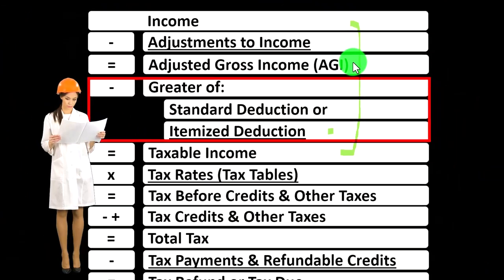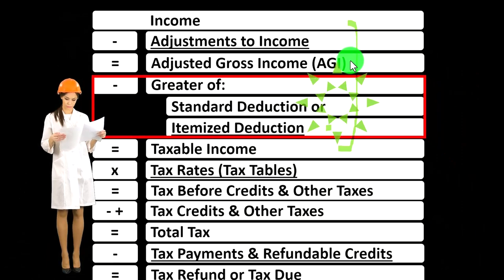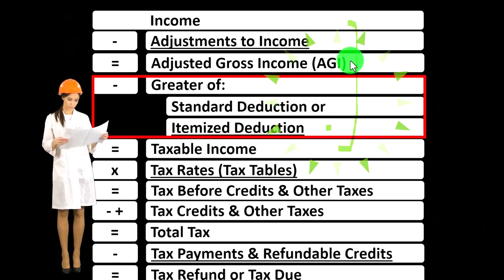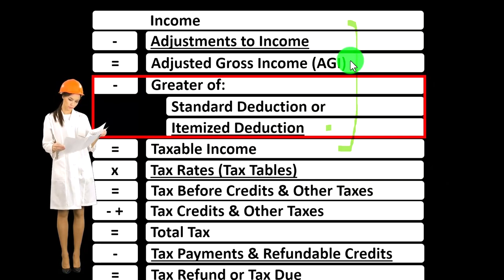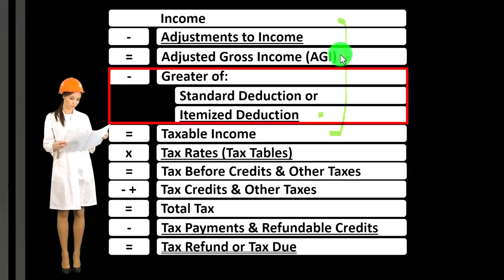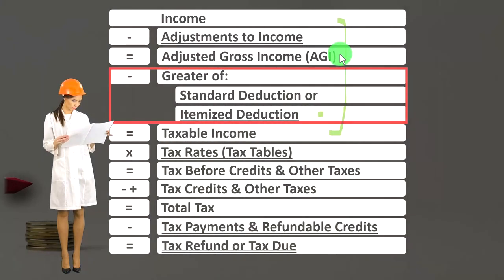They arrive at this subtotal of the adjusted gross income — the AGI. That adjusted gross income is often the number used, or at least based upon, when we have phase-outs, as income thresholds go up and we phase out certain deductions and certain credits.